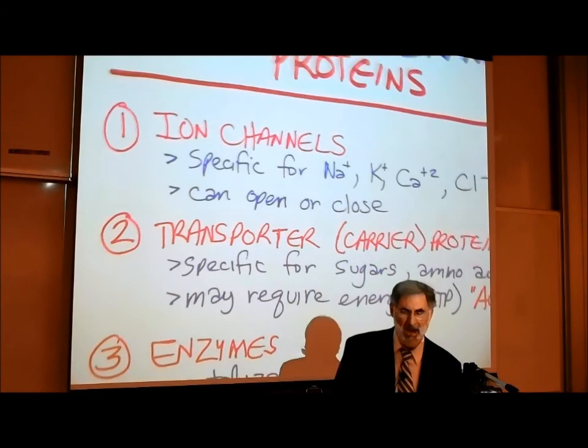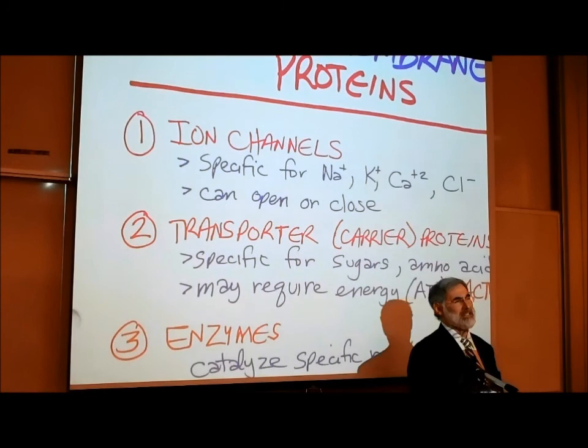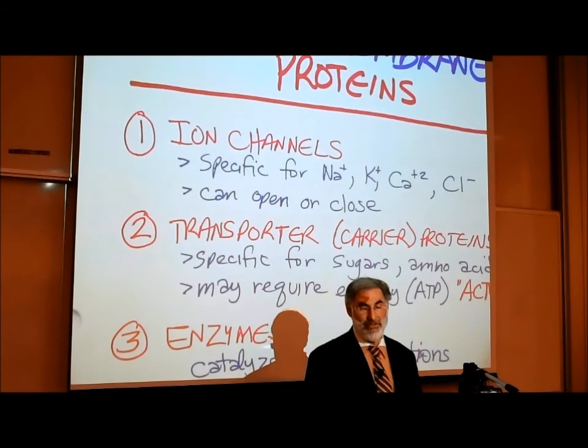An ion is an electrically charged atom. They have an electrical charge because they're either metals that gave away an electron and became positively charged, or they are non-metals like chloride, which are takers of electrons, so they become negatively charged.